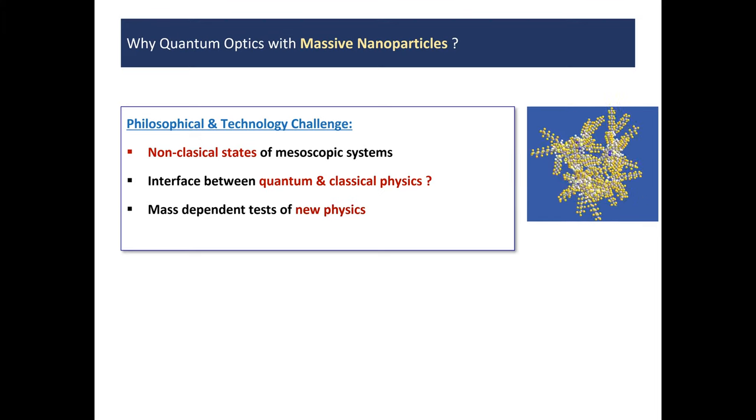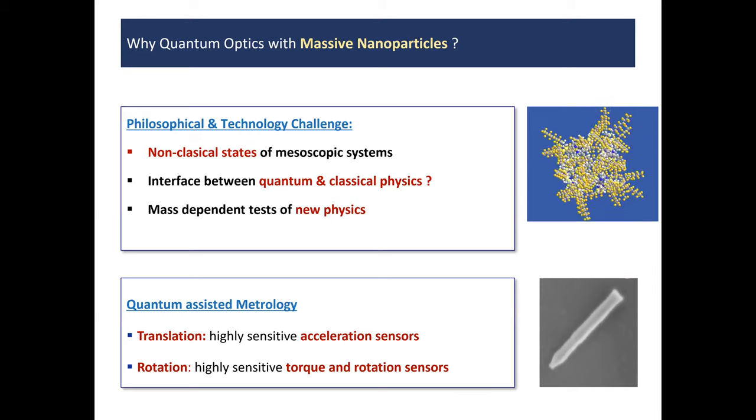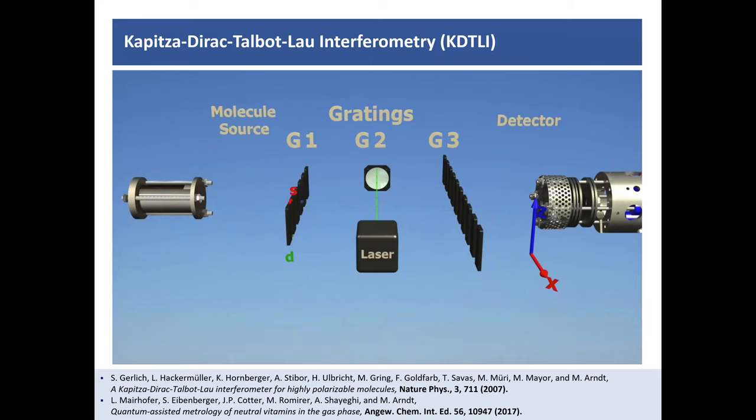And so why should we do quantum optics with massive nanoparticles at all? And on the one hand, there's a kind of philosophical and technological challenge just to prepare, not classical, but non-classical states of mesoscopic systems to see this interface between quantum and classical physics. Maybe to search for mass-dependent new physics. There are some ideas how to test for dark matter and other things, collapse of the wave function. And once you prepare these systems, you find that they are also useful for metrology. Not yet with the sensitivity that atom interferometry reaches,